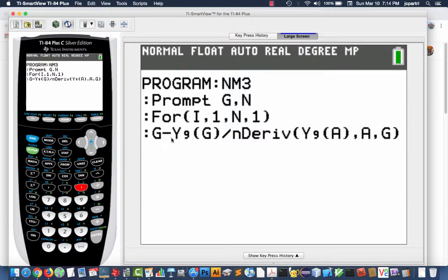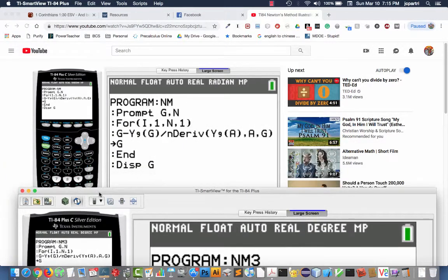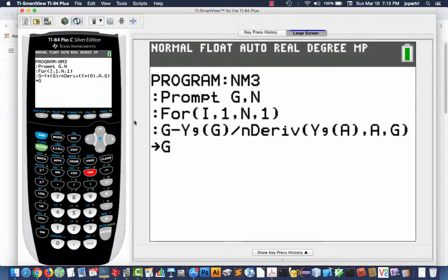Now, we're going to store all of that back into G because that obtains our next guess. So, you hit the STO key right here for store. And then, we store that back into G and that creates our next guess value. And so, this program is going to go again and again and again until it gets up to N, N times for iterating. Now, notice there's no colon here because this is all considered one line. So, the moment I hit enter, I am on a new line.